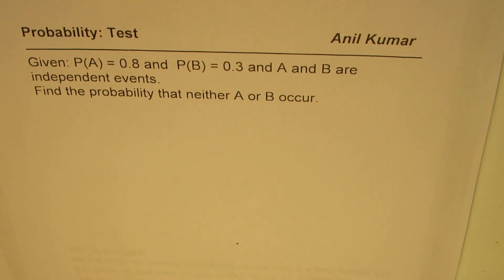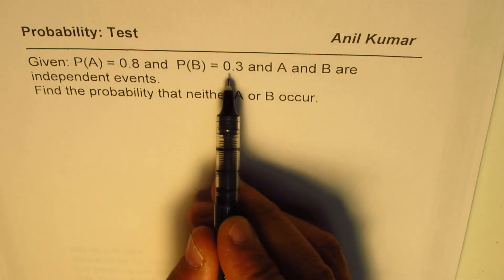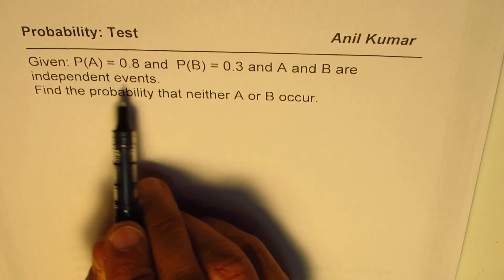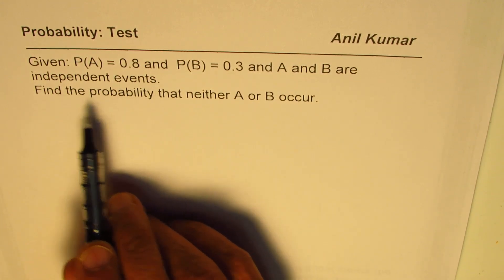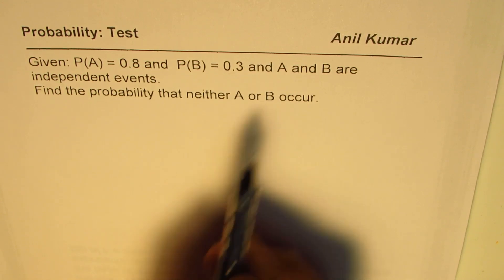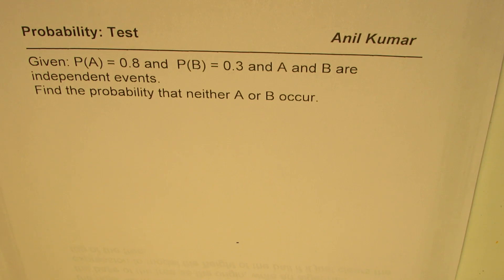I'm Anil Kumar. Here are questions from practice test. Given probability of A is 0.8 and probability of B is 0.3 and A and B are independent events, find the probability that neither A or B occurs.